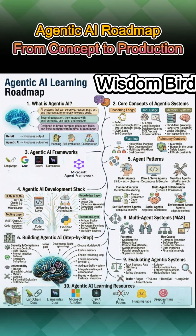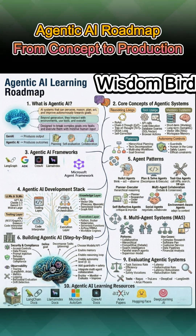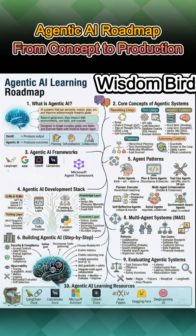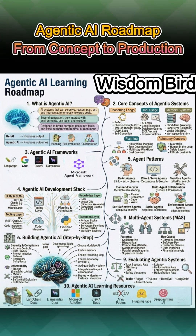Now the core building blocks — five critical systems. Reasoning loops: react, chain of thought, tree of thought, self-correction. Tool usage: APIs, databases, browser actions, web searches. Memory systems: short-term, long-term, vector stores, workspace memory. Planning: hierarchical planning, task decomposition, multi-step workflows. Autonomy controls: guardrails, human-in-the-loop checks, ethical constraints. These systems don't work in isolation — they combine in every production agent.